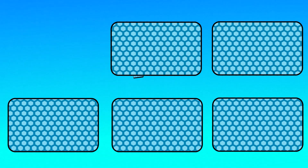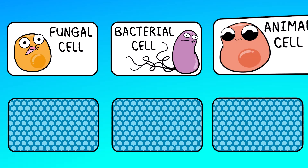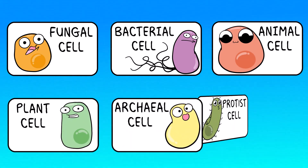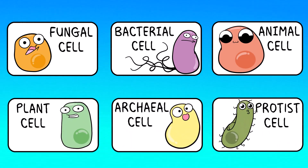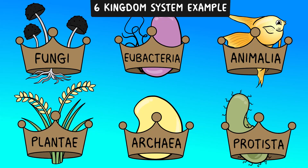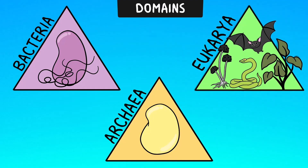A general fungal cell, bacterial cell, animal cell, plant cell, archaeal cell, and a protist cell. Although protist is such an informal category, as I've mentioned before. If you consider a six-kingdom system, these tend to be the cells of the organisms in those kingdoms. But I prefer focusing on domains instead.